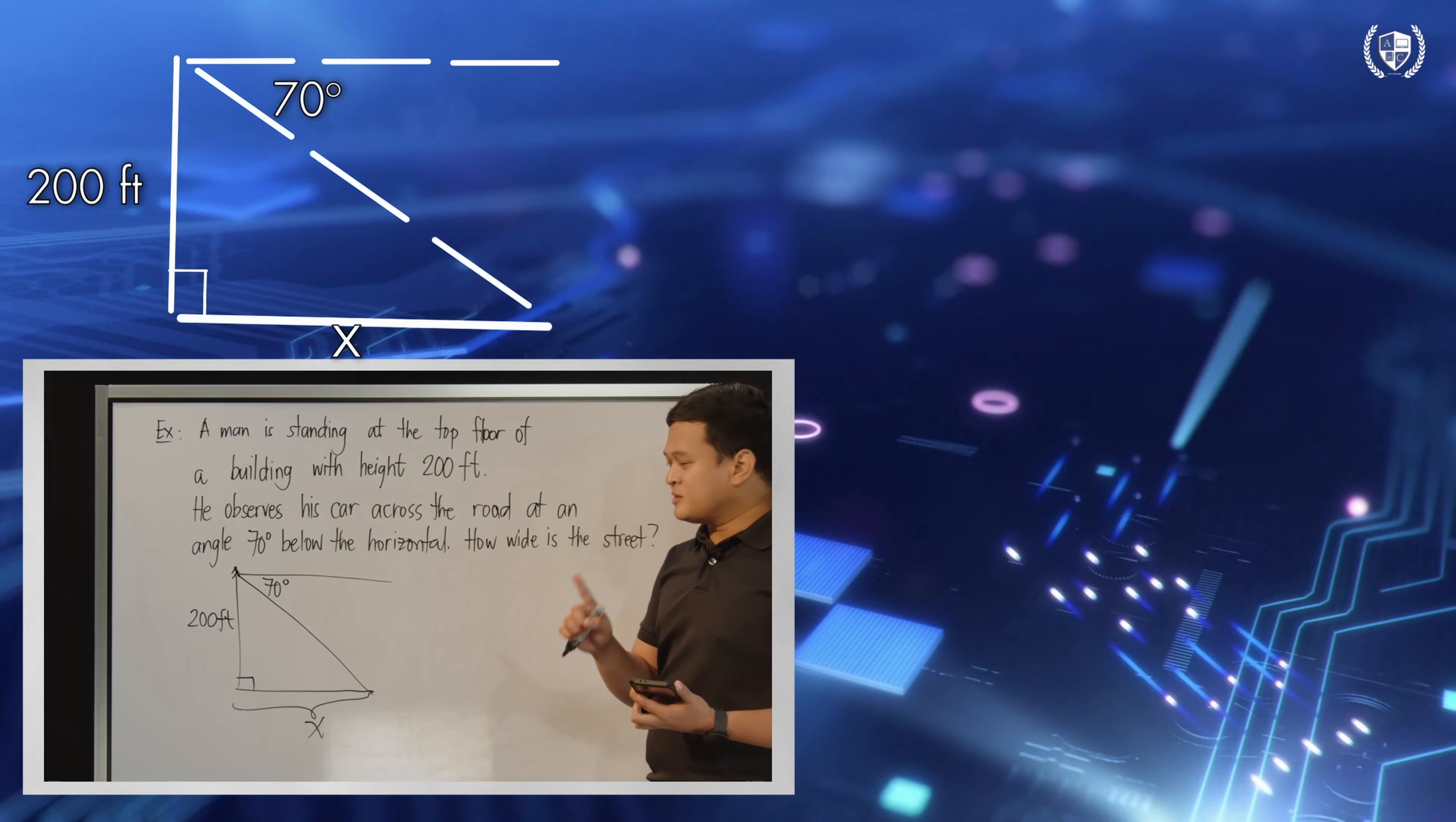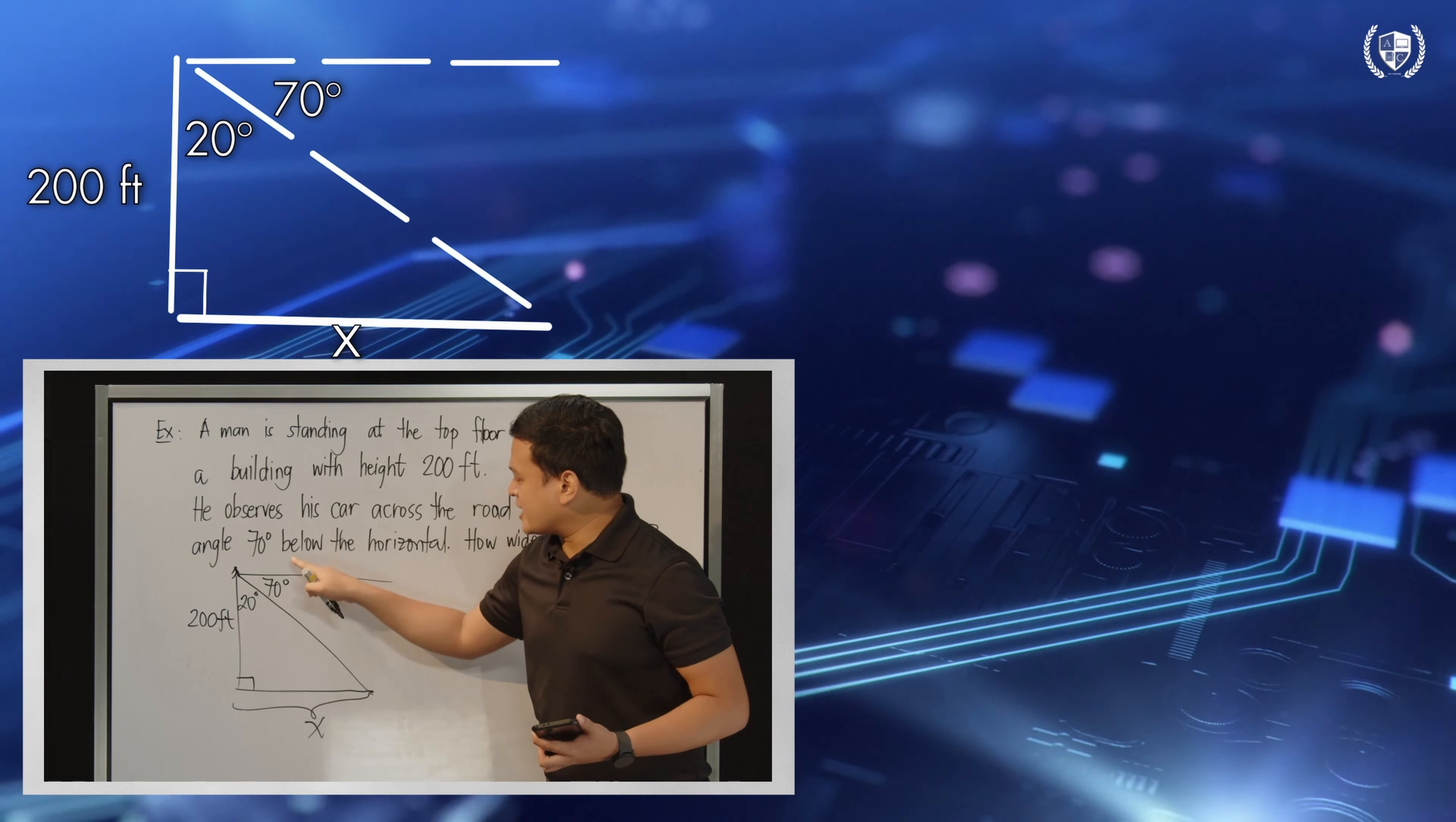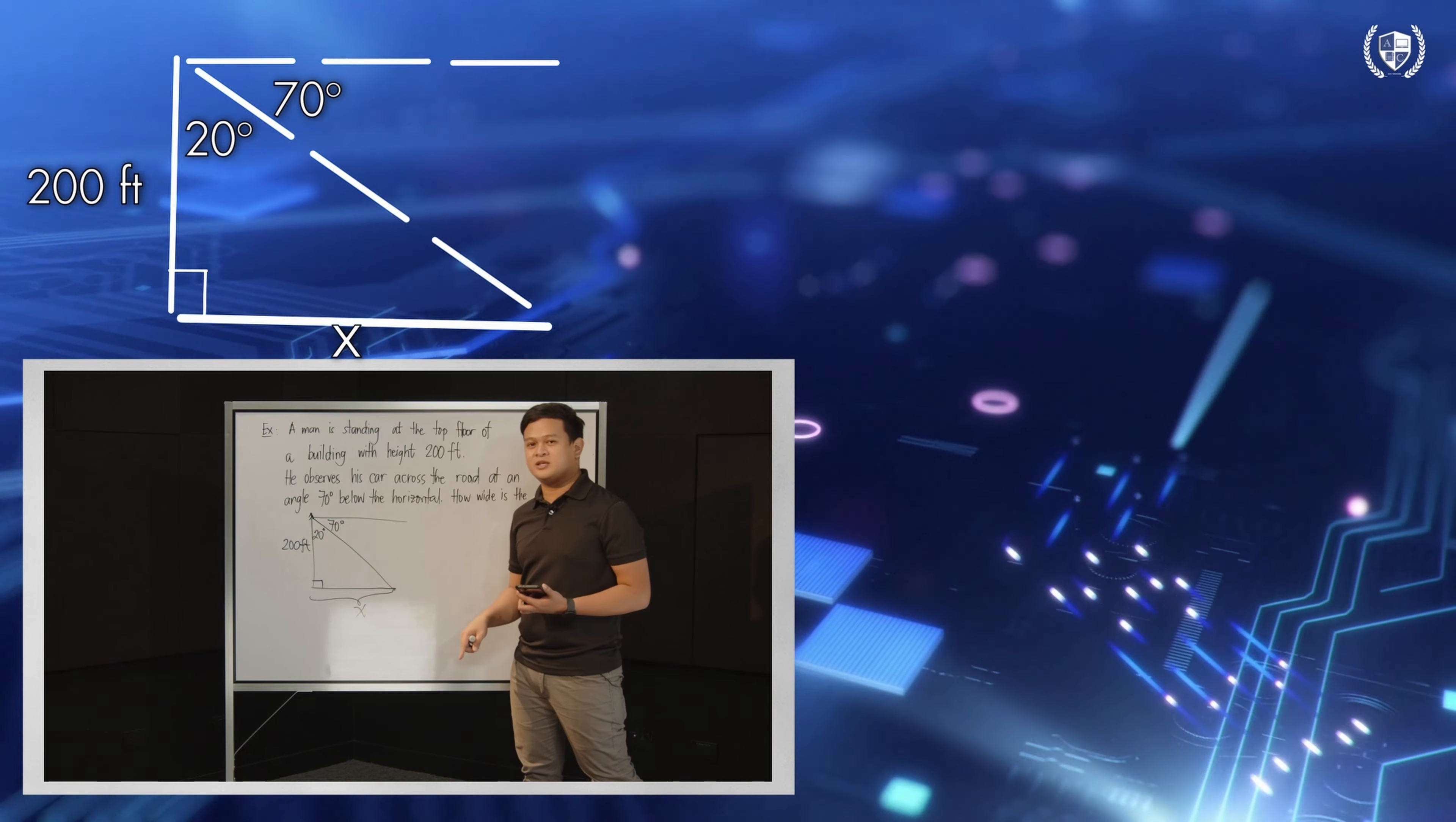If the first thing you thought is this should be 20 degrees, then good for you. Why? Notice that this angle should sum up to 90. And if you have 70 degrees there, to make 90, you just subtract 70 from 90. So, 90 minus 70, that would be 20 degrees.